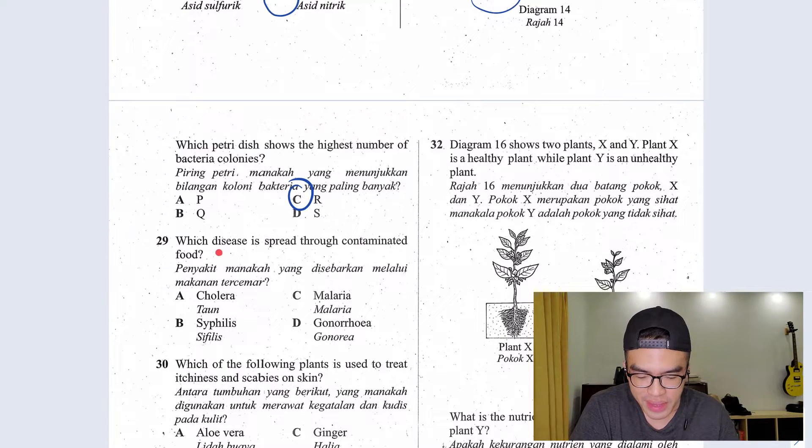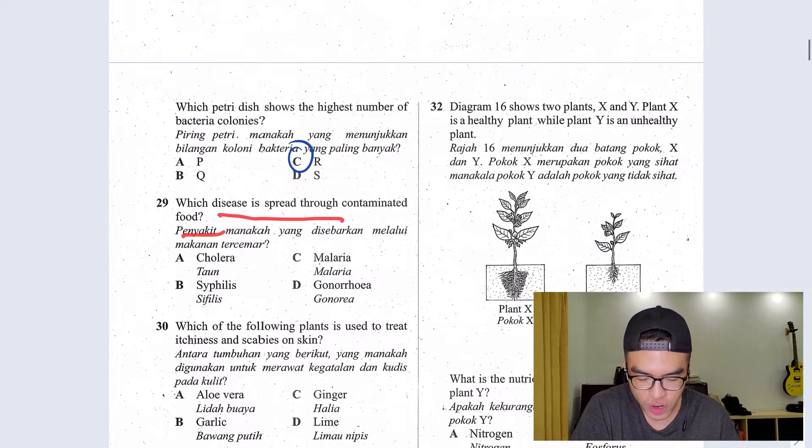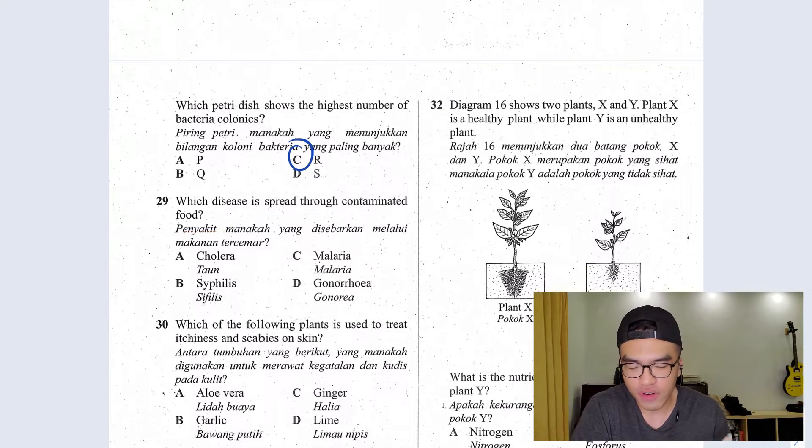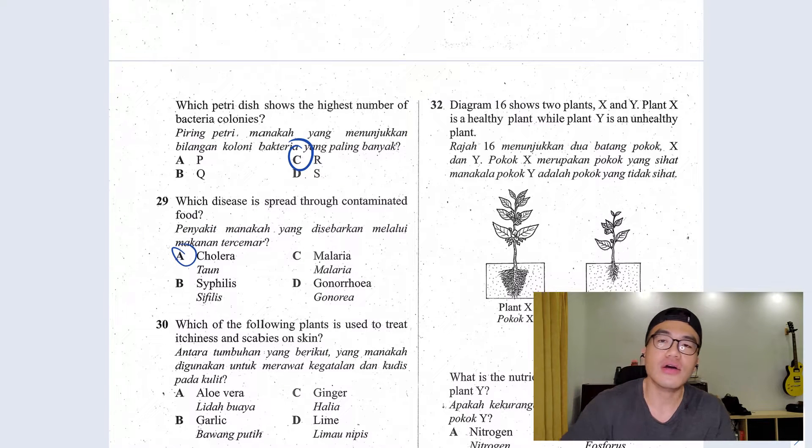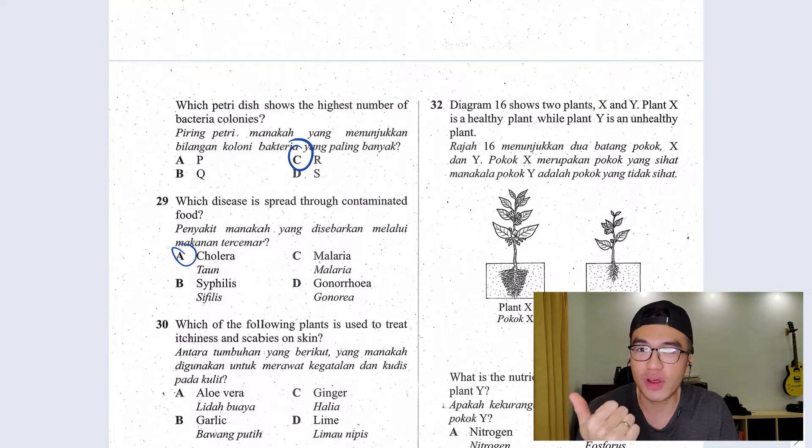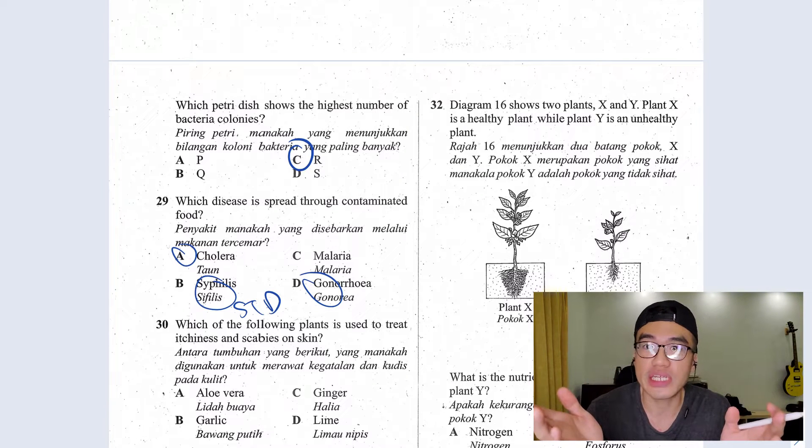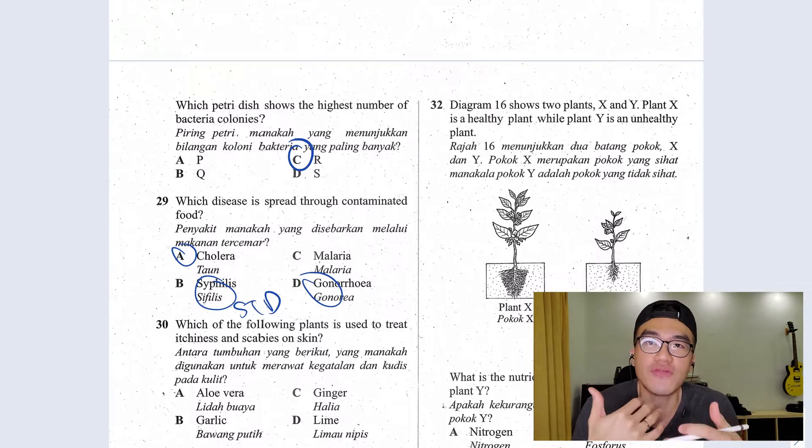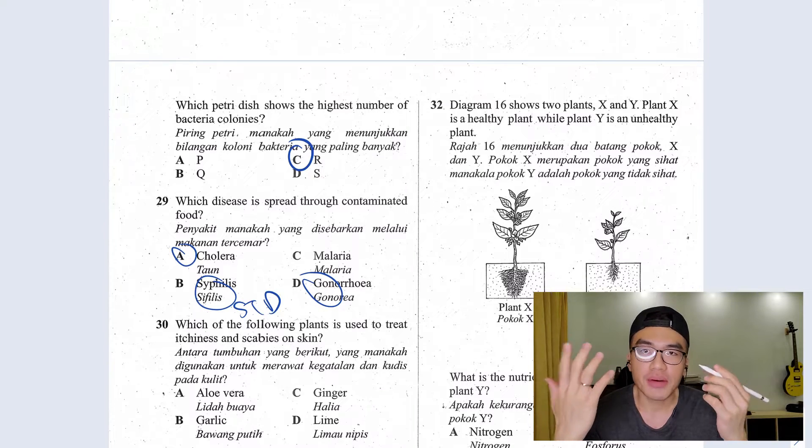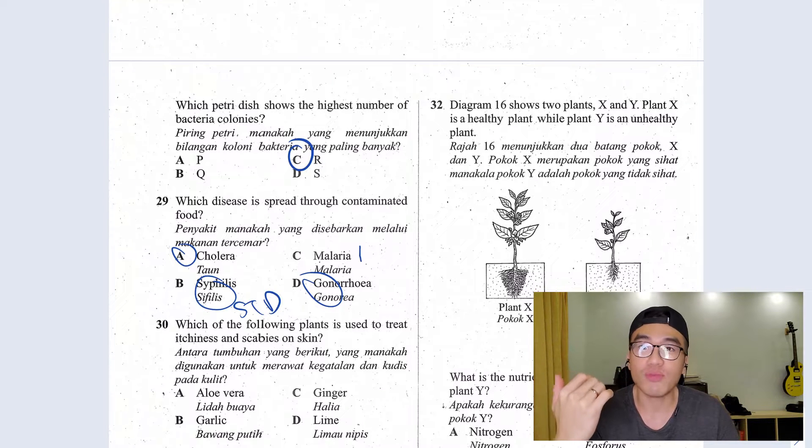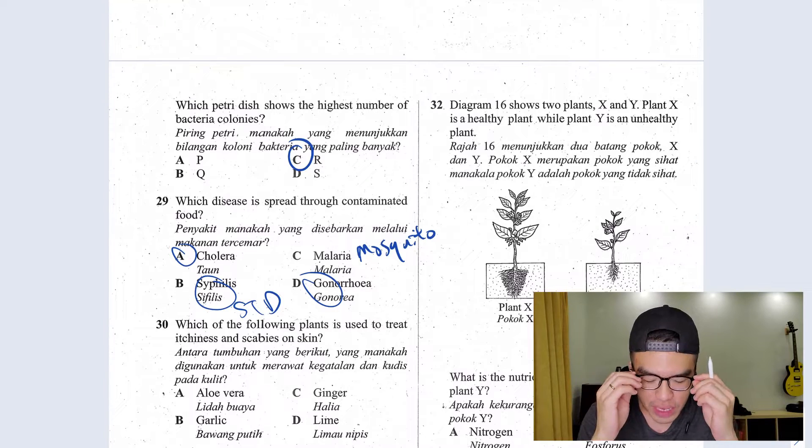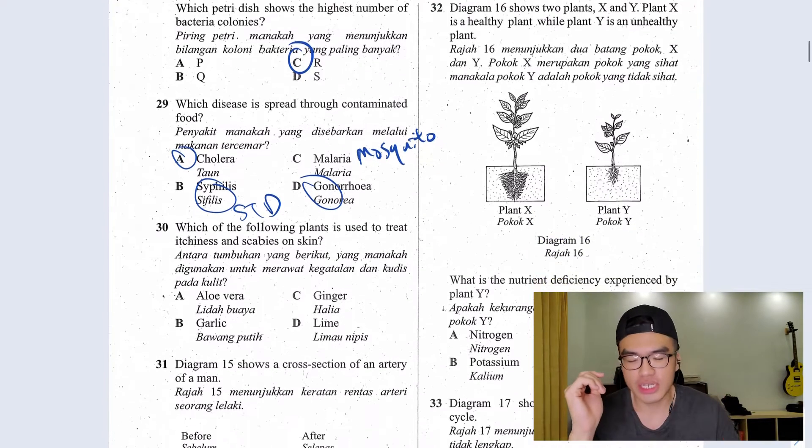Question 29, which disease is spread through contaminated food? For sure the answer would be A. Cholera is the disease spread by rats. This is also known as food poisoning. Syphilis and gonorrhea, they are STDs or sexually transmitted disease. They are transmitted by sexual contact. Malaria, this is spread by mosquito. They are a lot like dengue but they are caused by protozoa.